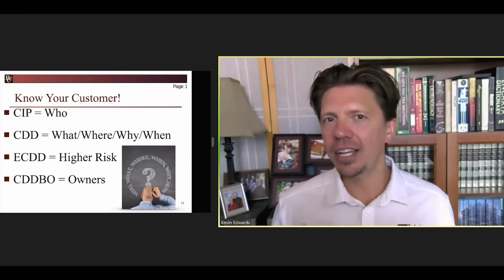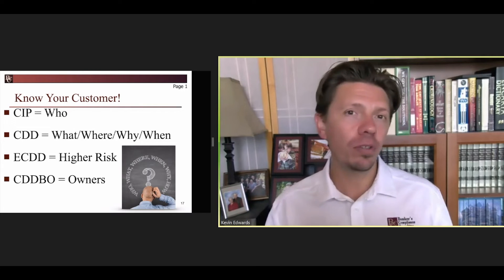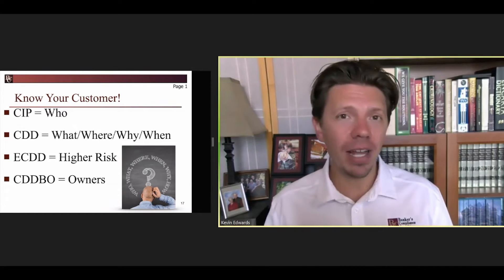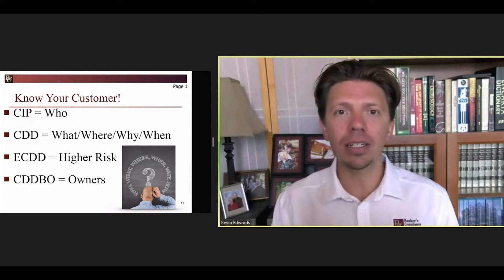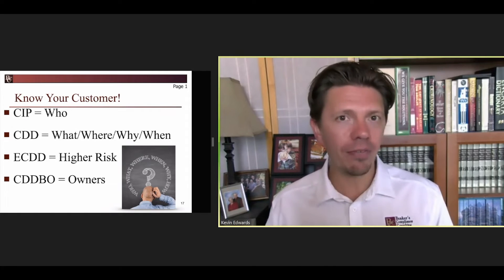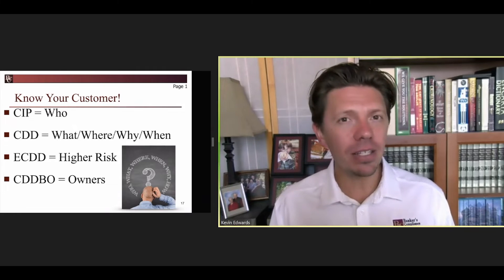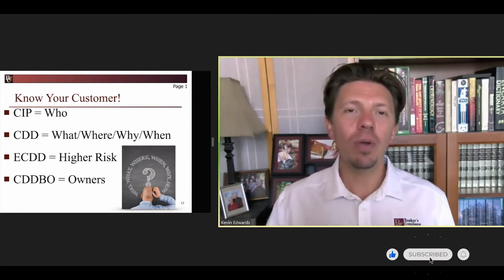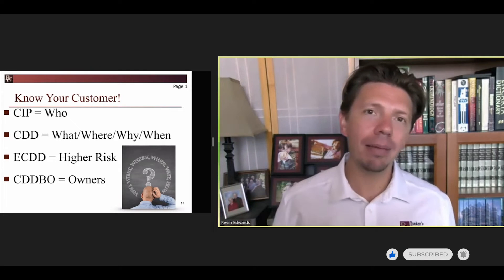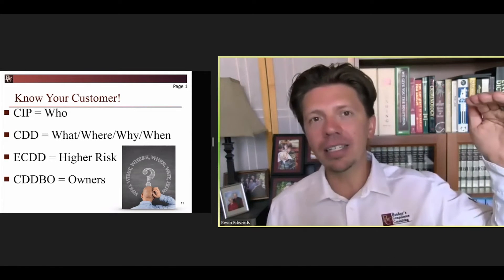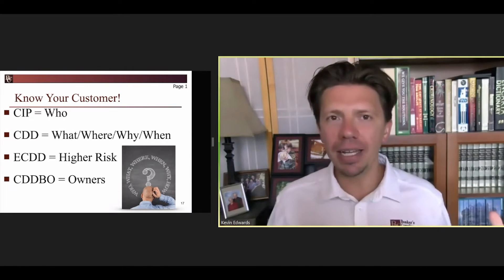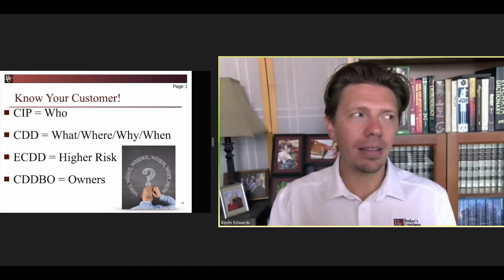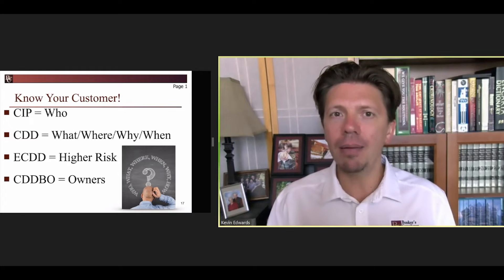Shell companies are often used for money laundering — to hide the source of funds or to move assets around in ways that aren't tracked very well. Because of this, we have a special rule: the beneficial owner rule. We are applying CIP, so you have a customer that's a legal entity, but we're expanding some of this CIP requirement to the owners and the beneficial owners of these companies.